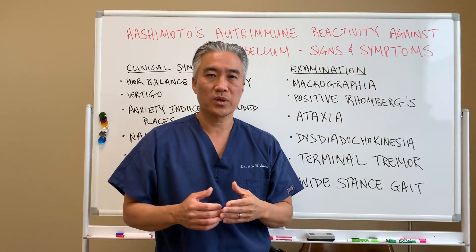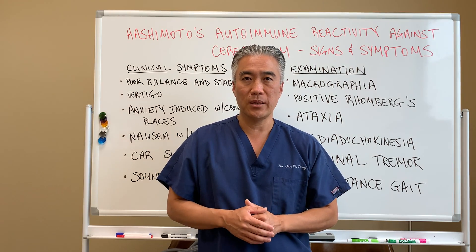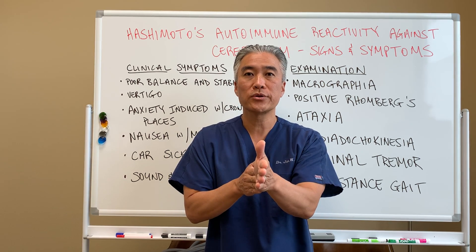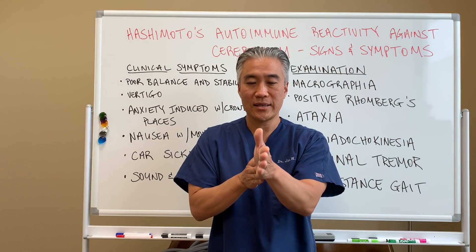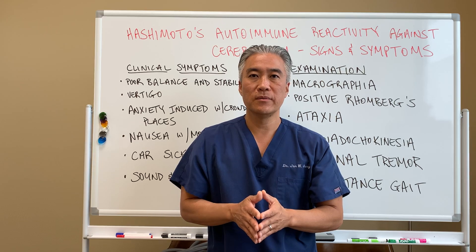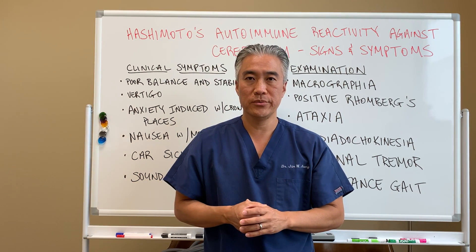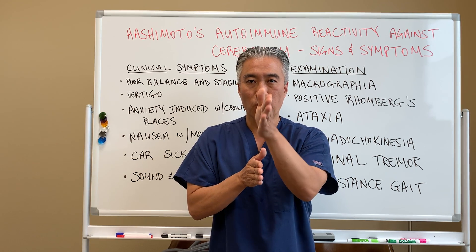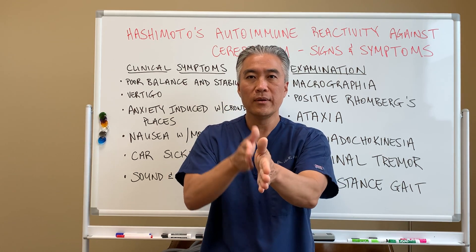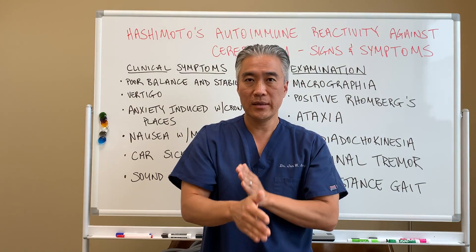We also look for a positive Romberg's. In our office, that means putting your feet together and seeing if you can balance. To stress the cerebellum further, you can do a tandem Romberg: put one foot in front of the other and stand there. You can try this at home — stand with your feet together and close your eyes. Are you swaying? That can indicate a cerebellum issue. You can also stress the patient with a tandem Romberg with eyes closed, one foot in front of the other. If you're falling over, it's an integration issue with the cerebellum.